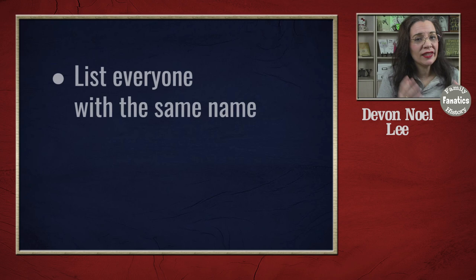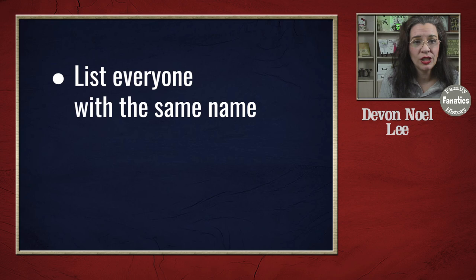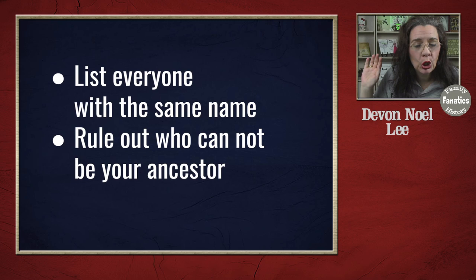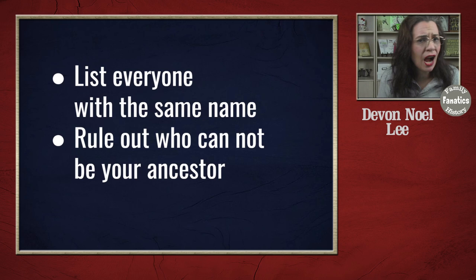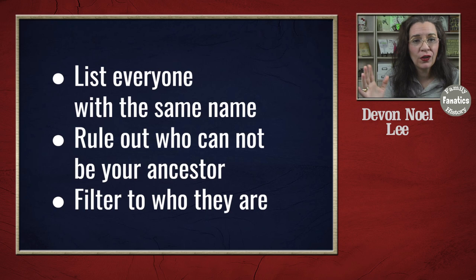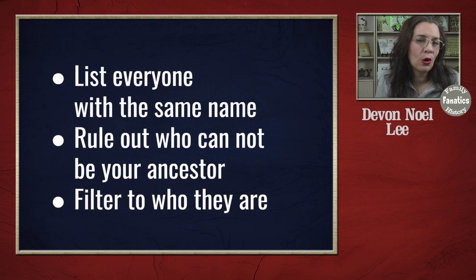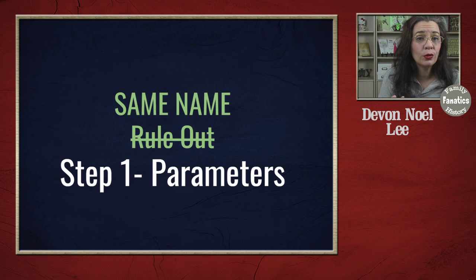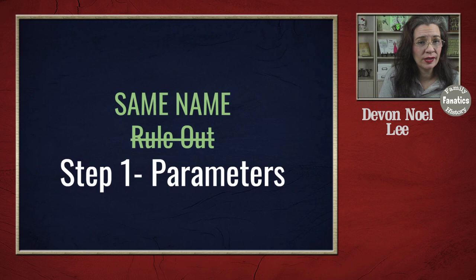In this same name rule out method, what you're trying to do is to definitively rule out and exclude people who could not possibly be your ancestor. They're not of the right age, not at the right place, they are connected to entirely different people through established documentation. After you've done this research, you filter down all of the possibilities that existed in, say, the United States. You're going to use reasonable parameters to find all of the possibilities and start excluding them, until you're left with either a handful of possibilities or just one.